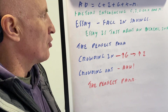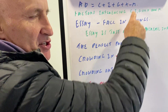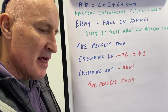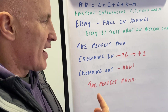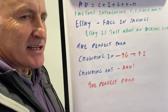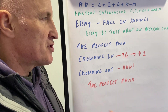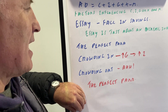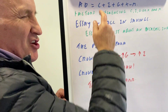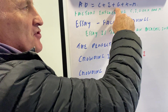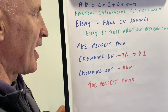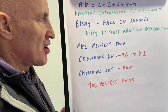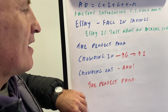AD = C + I + G + X − M. If savings fall, people are spending more, which increases AD — but that could generate demand-pull inflation, worsen the balance of payments, and leave banks with less money to lend to firms, pushing up interest rates. There's also an essay on factors influencing consumption — interest rates, employment levels, consumer confidence — factors influencing investment, government spending, and exports. As interest rates fall and employment rises, consumer confidence grows and people spend more.